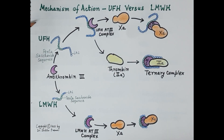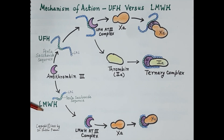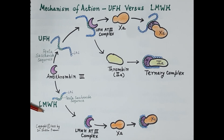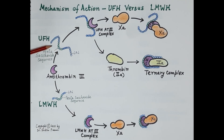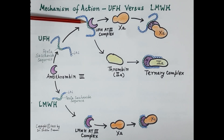Unfractionated heparin inhibits primarily clotting factor 10a as well as thrombin, whereas low molecular weight heparin primarily inhibits clotting factor 10a and is unable to inhibit thrombin (factor 2a). Heparin is a mixture of long polysaccharide chains. This diagram shows a single long polysaccharide chain of heparin consisting of an active pentasaccharide sequence — five sugars shown in green — and a long glucosaminoglycan shown in blue. The pentasaccharide sequence binds to antithrombin 3, induces a conformational change, activating it to inactivate thrombin and factor 10a.